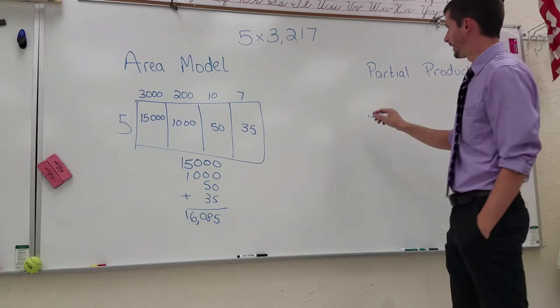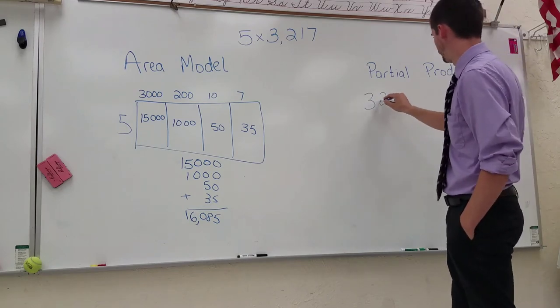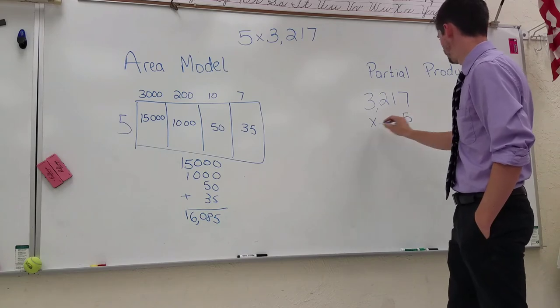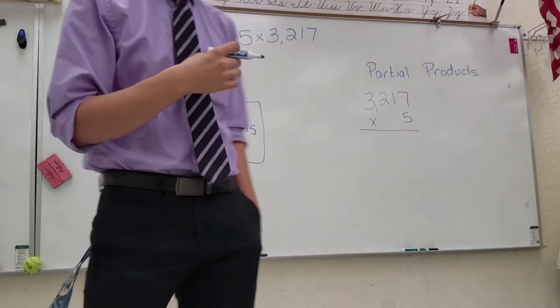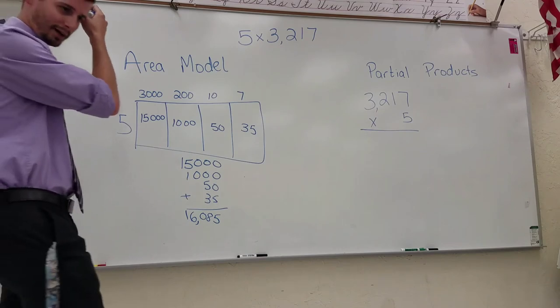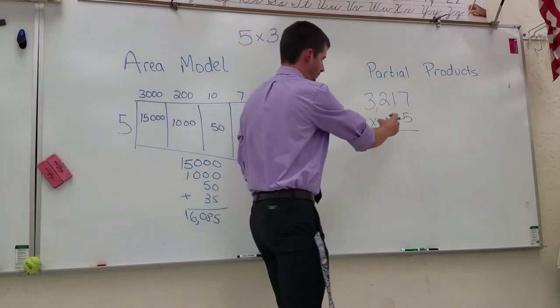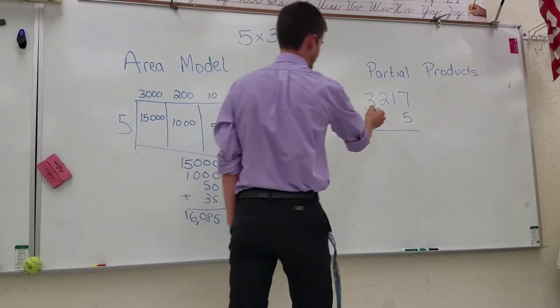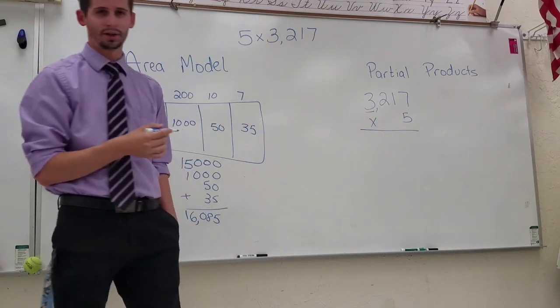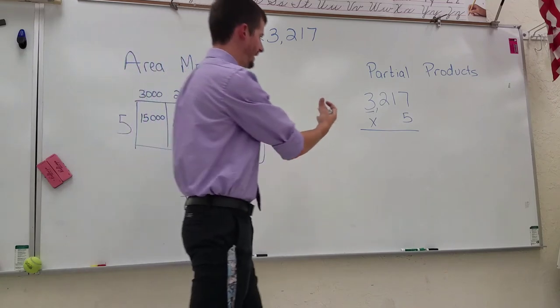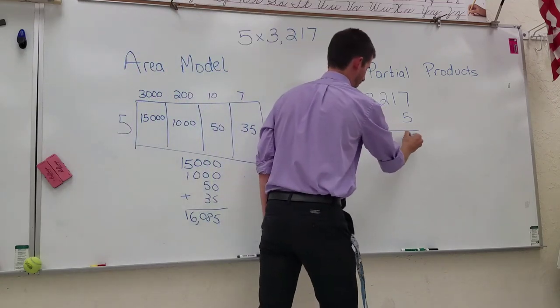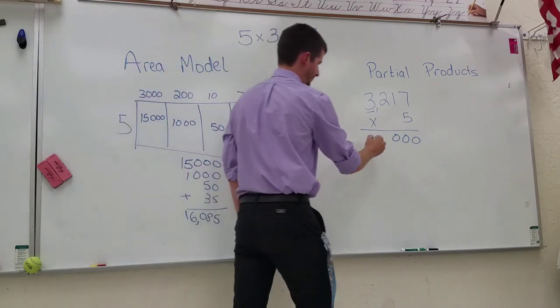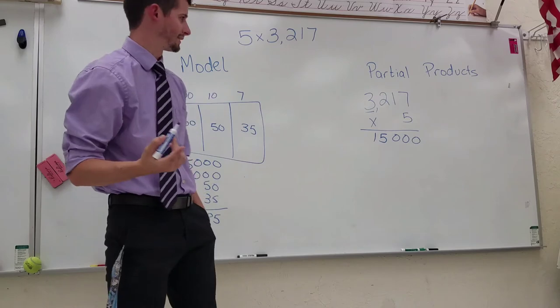Instead of solving it like that we're going to set up the problem in a similar fashion to what we were taught, where the larger number's on the top. Now we're going to take this 5 and we multiply it through each place value. So I'm going to start by multiplying it by my 3,000. So I'm going to take 5 multiplied by 3,000, there's going to be three zeros because that's how many zeros a thousand has, and now I'm going to do the 5 multiplied by the 3, and I get 15,000.